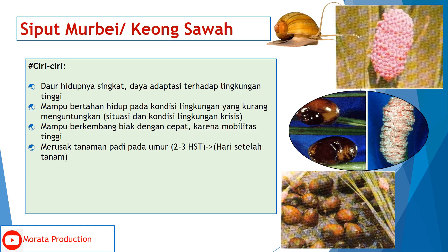Siput Murbei atau Keong Sawah memiliki ciri-ciri: pertama, daur hidupnya singkat dengan daya adaptasi terhadap lingkungan tinggi; kedua, mampu bertahan hidup pada kondisi lingkungan yang kurang menguntungkan; ketiga, mampu berkembang biak dengan cepat karena mobilitasnya tinggi; dan keempat, merusak tanaman padi pada umur 2 sampai 3 hari setelah tanam. Contoh telur dan Keong Dewasa dapat dilihat pada gambar di sebelah paling kanan.